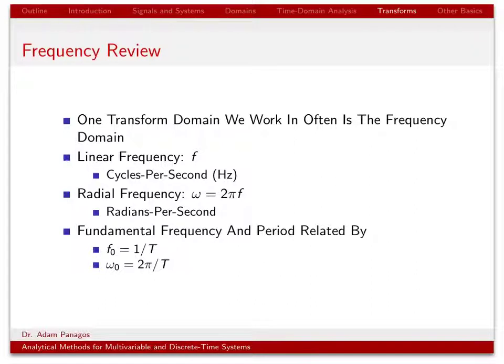Before we start talking about transforms specifically, let's review frequency domain variables. There are two ways we talk about frequency. We talk about linear frequencies, using the notation F, with units of hertz or cycles per second. The other way is radial frequency, using the variable omega. Radial frequency and linear frequency have a simple relationship: omega equals 2 pi times F. The units of radial frequency are radians per second.